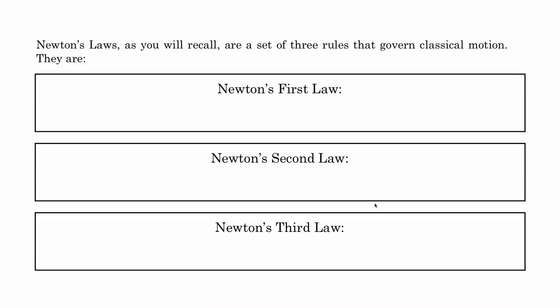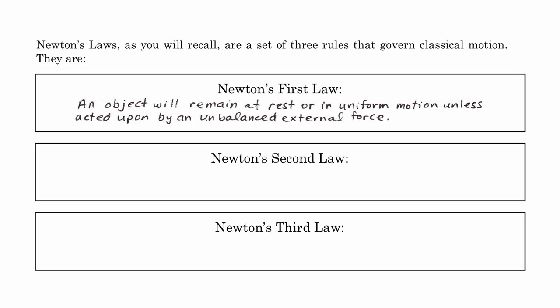Newton's laws — to summarize — there are three of them, and they govern classical mechanics. His first law, also sometimes called his law of inertia, states that an object will remain at rest or in uniform motion unless acted on by an unbalanced external force.